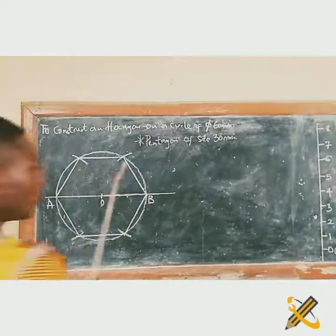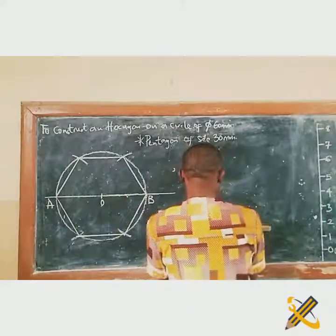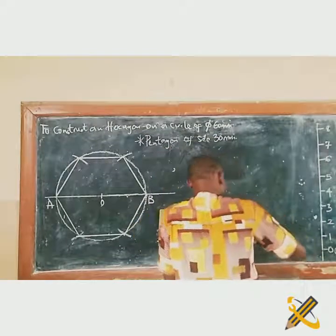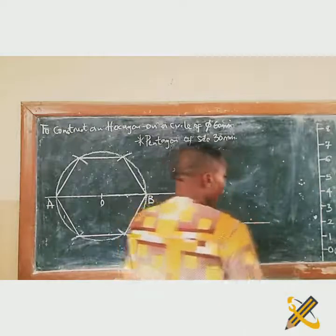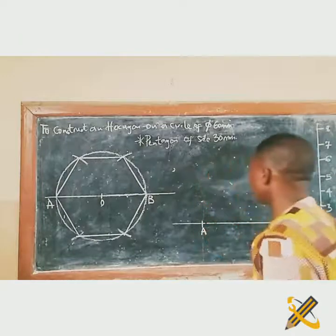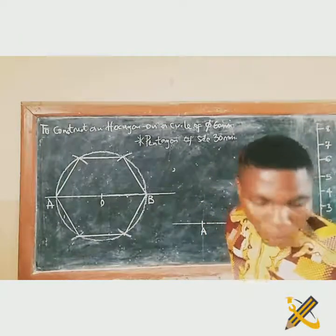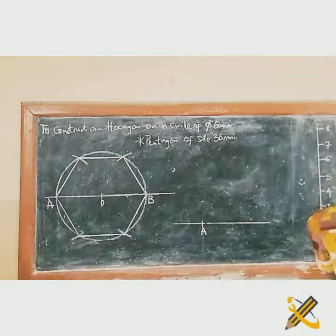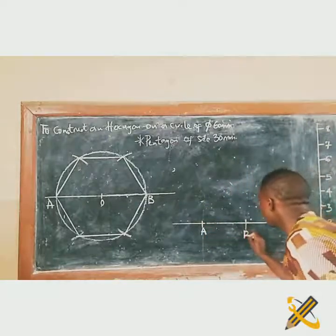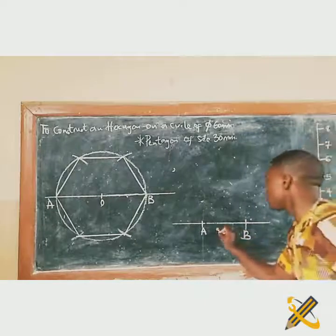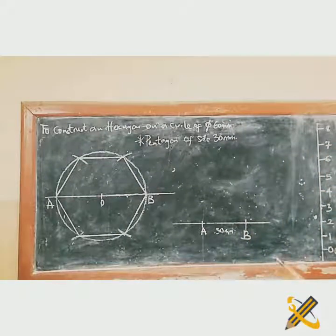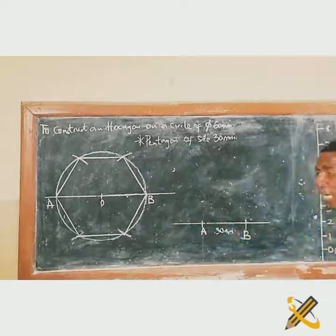The very first thing is to draw your baseline. I pick a point and name it point A. From point A, I pick my compass and measure 30 mm, then strike to get point B. So AB is 30 mm — that is the given side length. The next step is to bisect line AB.